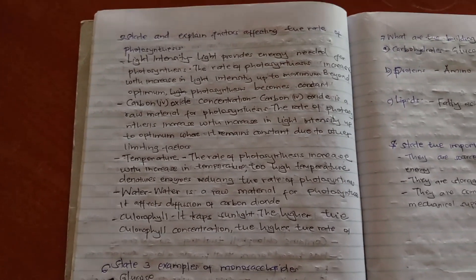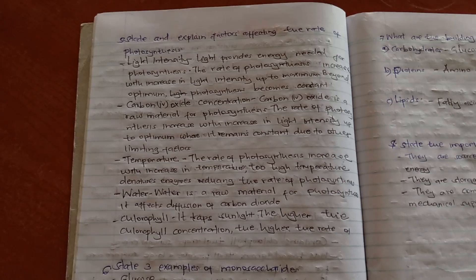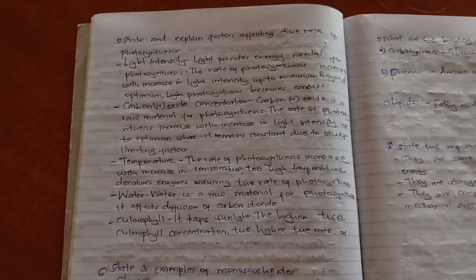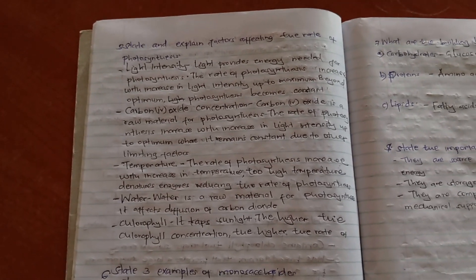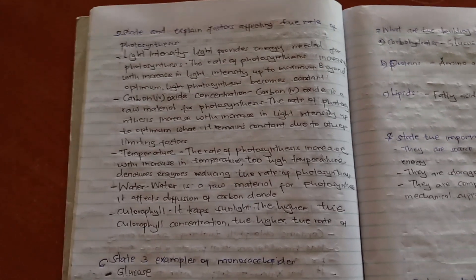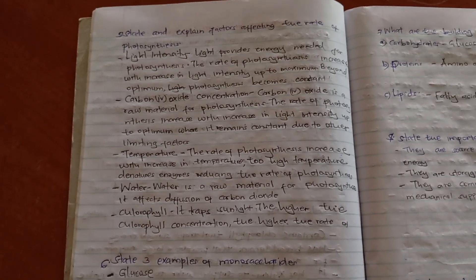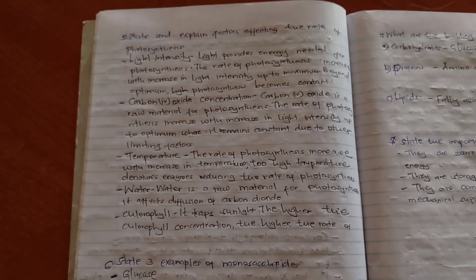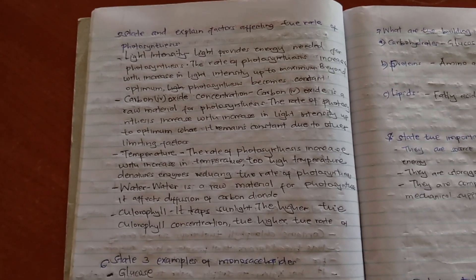Temperature, the rate of photosynthesis increases with increase in temperature, but too high temperature denatures the enzyme. Remember, photosynthesis is affected by enzymes, so too high temperature denatures the enzyme. So it is good up to optimum temperature.